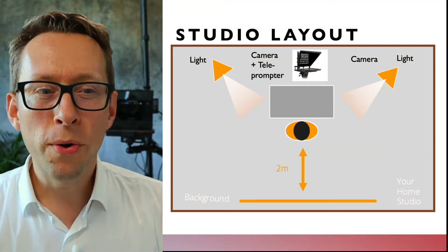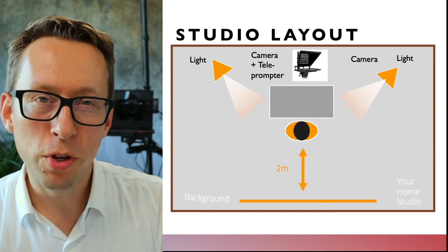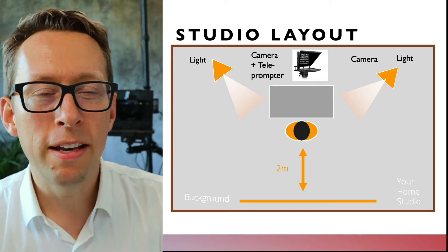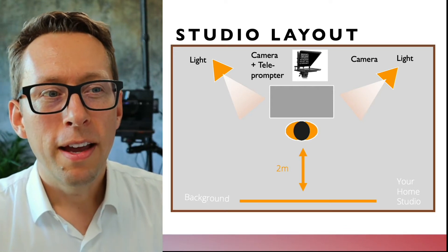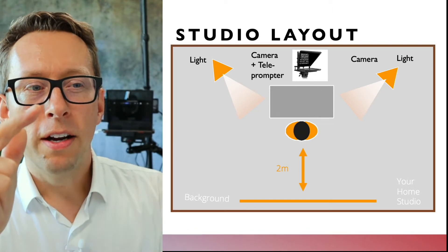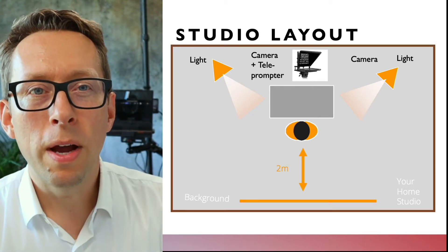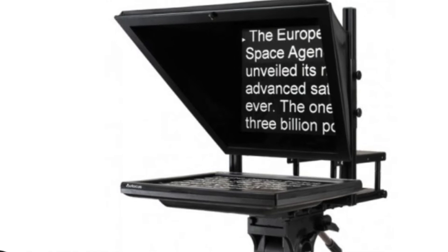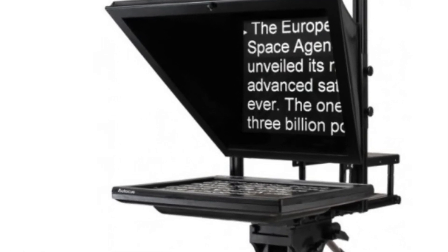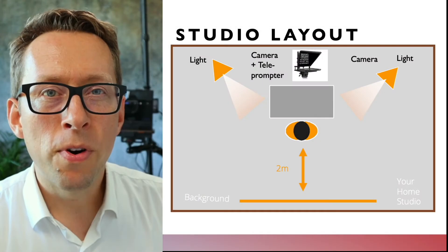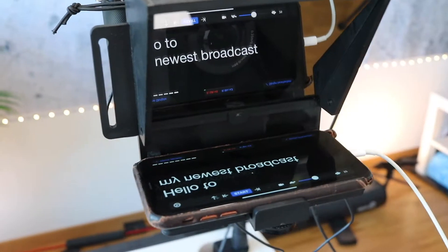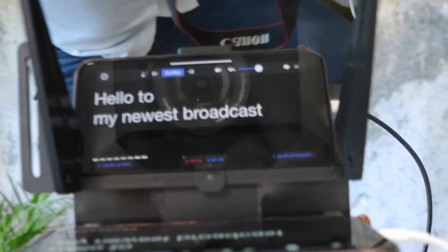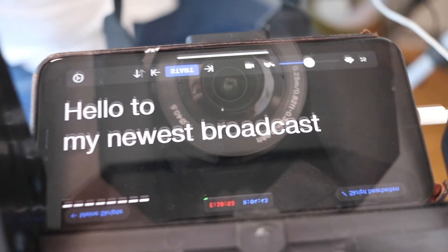This is the studio layout of your potential home studio. You have the camera, the light, the background, the sound — everything is okay. The teleprompter actually finds itself here, on top where the camera is, and it is in front of the camera. It is a 45-degree semi-transparent mirror that reflects a screen and therefore reflects the text onto this surface. So you're looking at the surface and can read the text, but the camera is shooting through it.